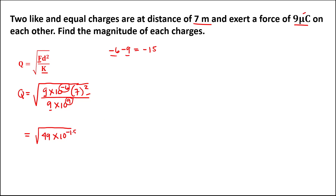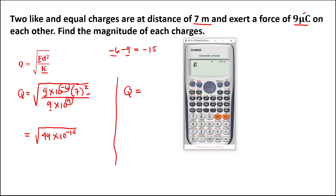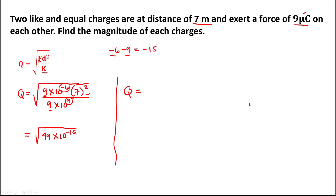To solve for the magnitude of each charge, we take the square root of 49 times 10 to the power negative 15. This is equal to 2.21 times 10 to the power negative 7 coulombs.